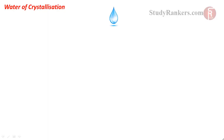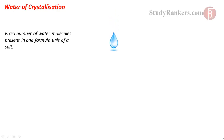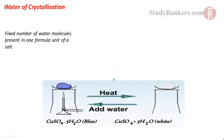The 10H₂O in the formula refers to the water of crystallization — the fixed number of water molecules present in one formula unit of a salt. For example, crystalline blue copper sulphate is CuSO₄·5H₂O. If heated in a test tube, the water of crystallization is removed from the crystals and CuSO₄ turns white, becoming anhydrous copper sulphate.